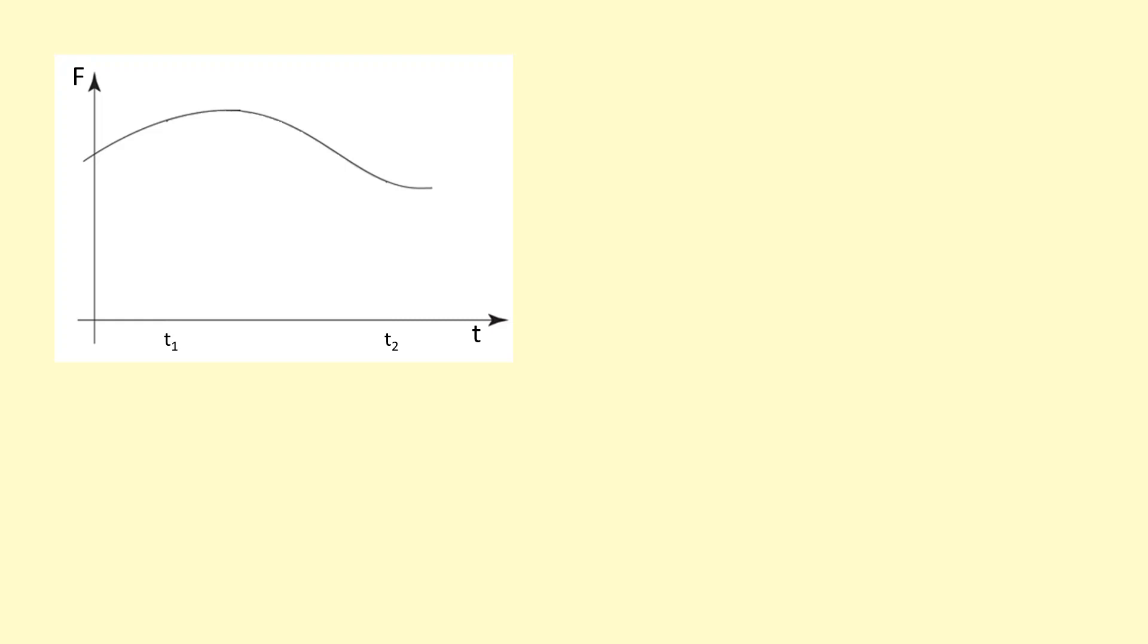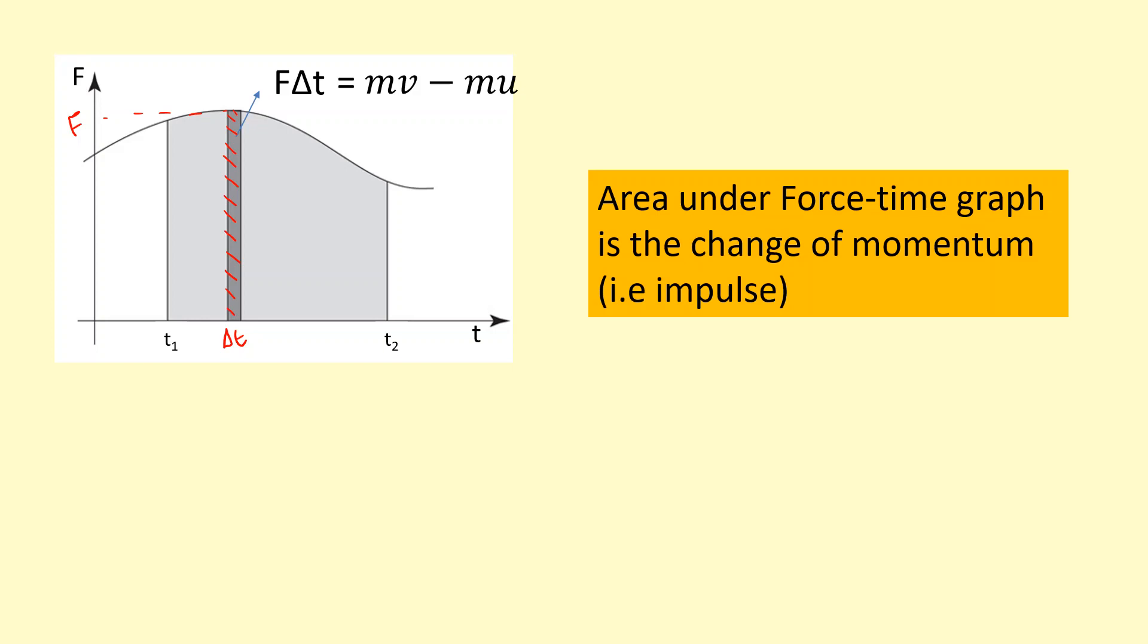So why is impulse useful? Consider this graph where the force is changing over time. And I'm interested in what happens with the momentum between T1 and T2. If I take a tiny strip over here, if I do the force at this point times by the width of that, the change in time, that actually gives me this area. And force times time, as you know, is equal to the change in momentum, or the impulse. So in other words, if I work out the area of this whole section between T1 and T2, I can work out the change in momentum between those two points. The area under force time graph is the change in momentum.